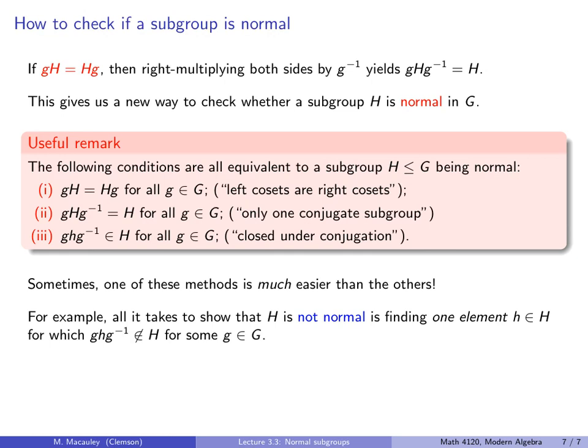I like to show you these three ways and summarize them in this big red box because sometimes one of these methods is much easier than the others. For example, if you suspect that a subgroup H is not normal, then all it takes to show that H is not normal is to find a single element, h, or little h, whose conjugate does not lie in H. If you can do that, then automatically H is not normal. You don't need to check every single left and right coset or every single conjugate.